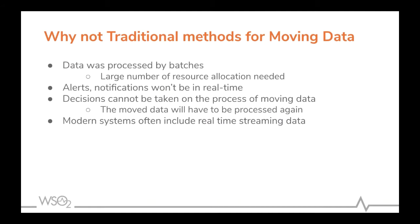This slide mentions why we are not using traditional methods for moving data. It's mainly because data has to be processed in batches, so as the dataset gets larger, a larger number of resources are needed for processing. Also, alerts and notifications won't be in real time, and decisions cannot be taken during the process of moving data. If those alerts and notifications need to be generated, data has to be processed all over again. Today's systems often include real-time streaming data, so traditional batch processing methods are not capable of handling today's processing needs.